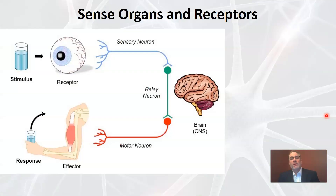Let's jump right in. We're going to look at a diagram about Sense Organs and Receptors. In the diagram, we have a glass of water labeled as a stimulus, a receptor that looks like a big eyeball, a sensory neuron — think of nerves in a nervous system — a relay neuron, the brain labeled CNS meaning central nervous system, a motor neuron, an effector which in this case is a muscle attached to the skeletal system, and finally a response with an arrow moving upward.